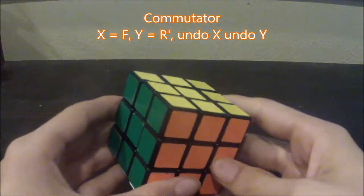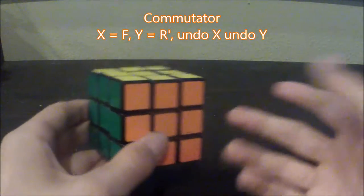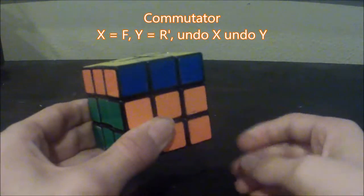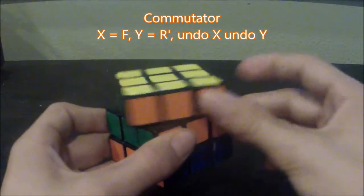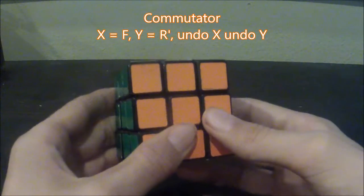Now comes the tricky part, actually making the commutator. Before, we did technically make a commutator. It was like this, then this, then undo X, and then undo Y. But that didn't actually do anything, at least anything helpful.